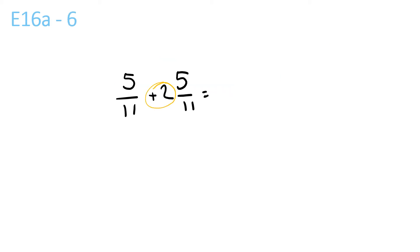So that's 2 there, so 2, 5 and 5, 10 over 11, because the bottom one stays the same. 2 plus 3, 5 over 11, over 10, over 11.